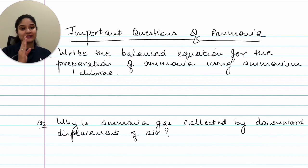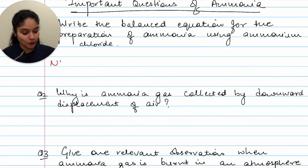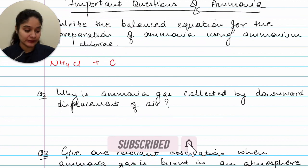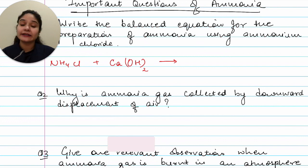Write the balanced equation for the preparation of ammonia using ammonium chloride. So what is ammonium chloride? That is NH4Cl. It reacts with calcium hydroxide, so you would have Ca(OH)2. That gives us calcium chloride CaCl2 plus water plus ammonia. You can balance the equation on your own.